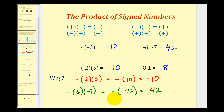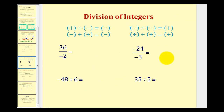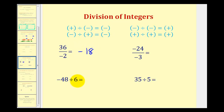Now let's take a look at some division examples. Notice the rules are the same, except now we'll be dividing instead of multiplying. Positive 36 divided by negative two — that'll be negative 18. Negative 48 divided by positive six — a negative divided by a positive is still negative, so that'll be negative eight.